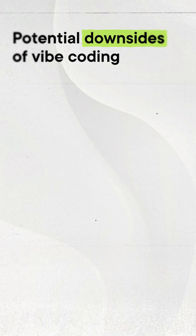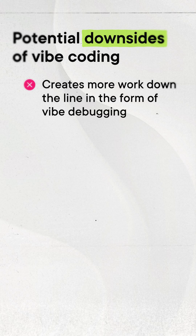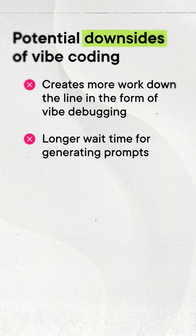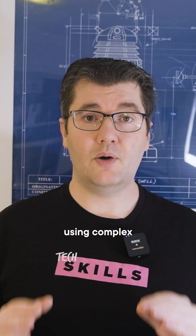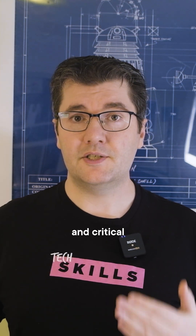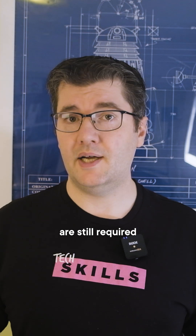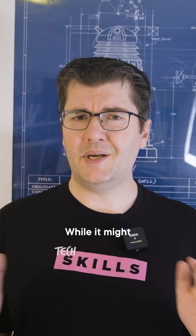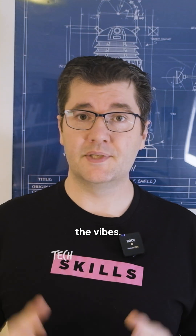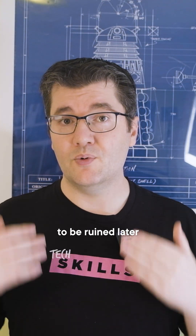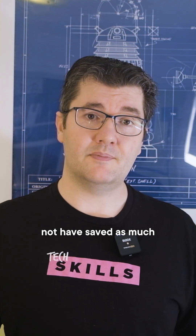Note that I said theoretically. While it may seem that Vibe Coding saves time and makes things easier, there's evidence suggesting it simply creates more work further down the line in the form of something called Vibe Debugging. Developers often underestimate the time it takes generating prompts and waiting for the AI to do its work, which tends to result in slower development times, not faster. AI does not think or reason — it's just using complex pattern recognition. As a developer, your knowledge and critical thinking skills are still required to validate those inputs and outputs. Chances are your vibe is going to be ruined later with excessive debugging, and you may not have saved as much time as you think.